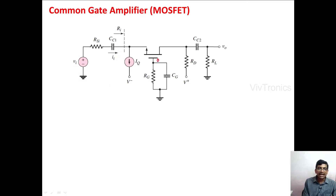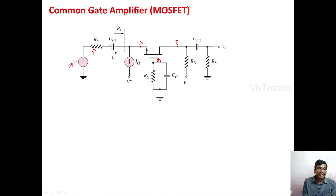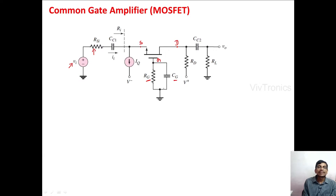Here the gate terminal is common for both input and output side circuit. The source terminal is the input terminal and the drain terminal is the output terminal. Vi is the small signal input voltage and Rsi is the source resistance. CC1 is a coupling capacitor that will block the DC and allow the AC signal into the source terminal. IQ is a constant current source given to the source terminal. The gate terminal has been connected to ground through resistor Rg, and a gate bypass capacitor Cg is used in parallel with Rg to increase the gain of the amplifier by bypassing Rg.